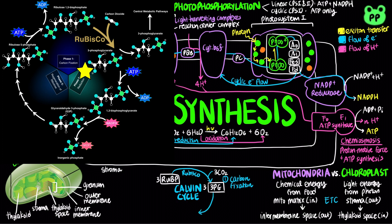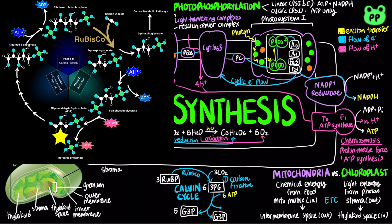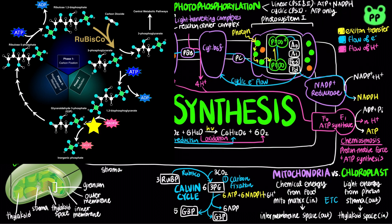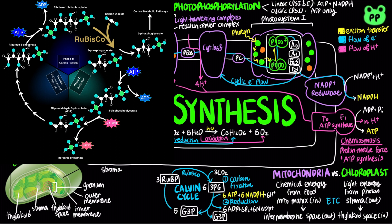During the reduction phase, six molecules of 3-phosphoglycerate are converted to six molecules of glyceraldehyde 3-phosphate, which requires the hydrolysis of six ATP and the reduction of six NADPH from the light reaction. One molecule of glyceraldehyde 3-phosphate leaves the cycle and the rest enters phase three.